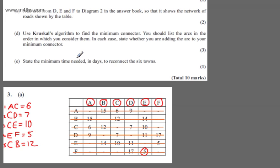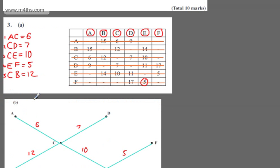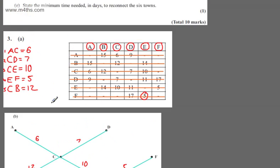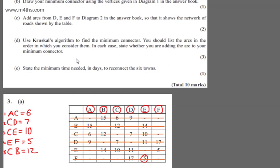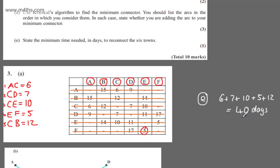In part E, for one mark, we need to state the minimum time needed. Adding up the arcs in the minimum spanning tree: 6 + 7 + 10 + 5 + 12 = 40 days. So 40 days is the minimum time needed to reconnect the six towns.